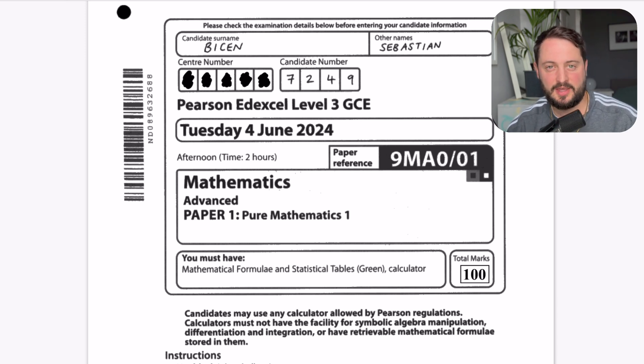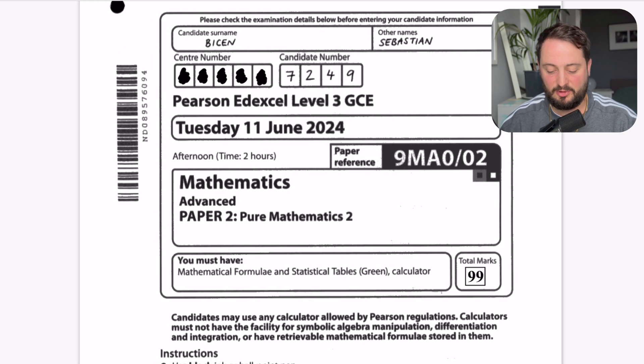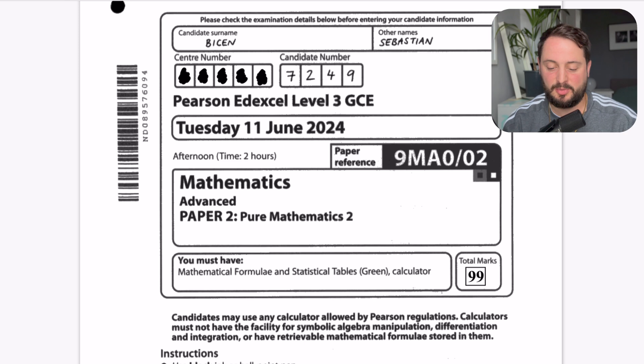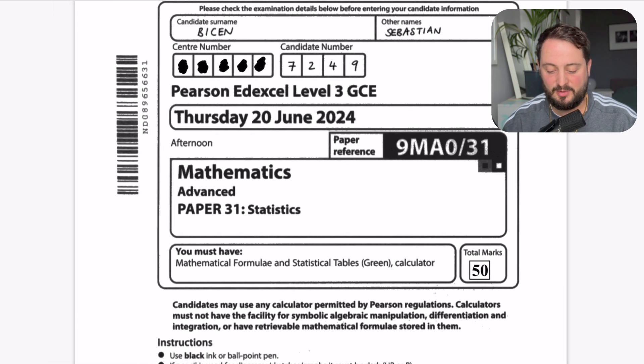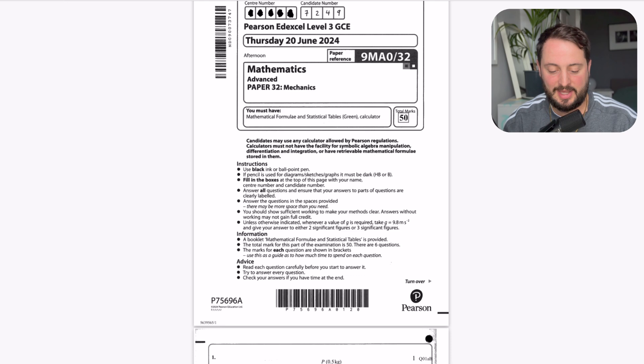Now I can't share the actual questions just yet because these papers are officially locked on the Edexcel website, but later in the year I can go through them in a bit more detail. So you can see in this first paper, 100 out of 100, very happy with that. This though was where I dropped the mark in the second pure paper, and just to prove it to you, I've got the statistics paper here with 50 marks and also the mechanics paper.